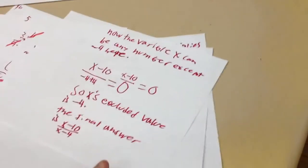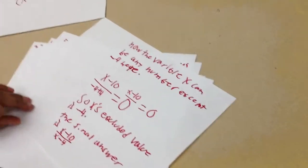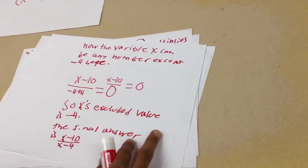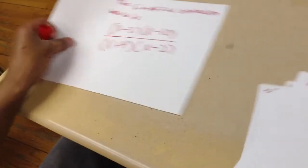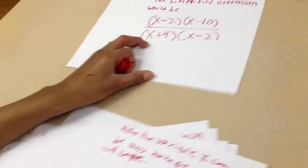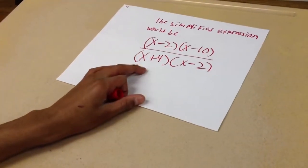Organize these so we can see them. The variable x can be any number, but in this problem, since you can't have 0 on the bottom, x can't be negative 4 because negative 4 plus positive 4 equals 0.